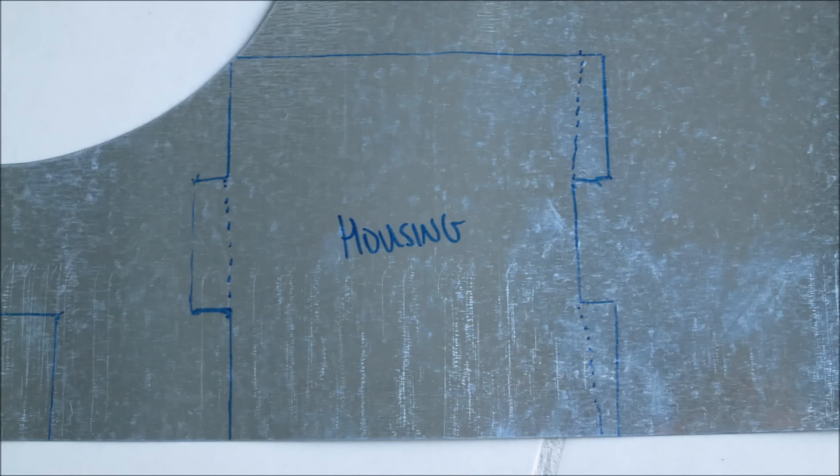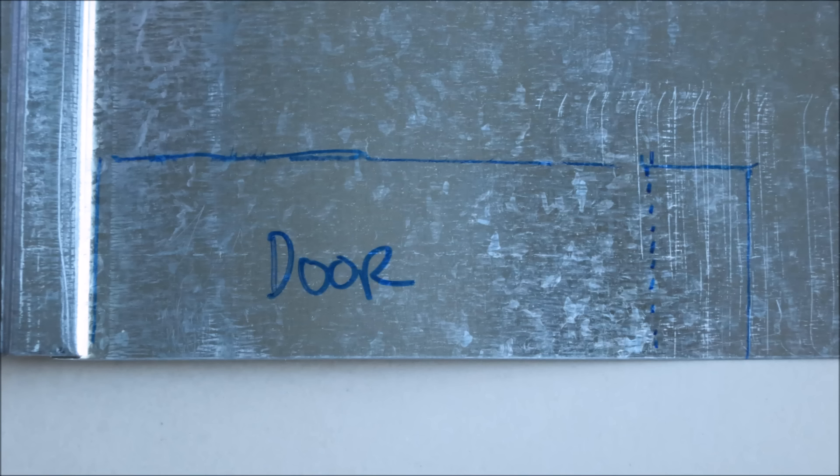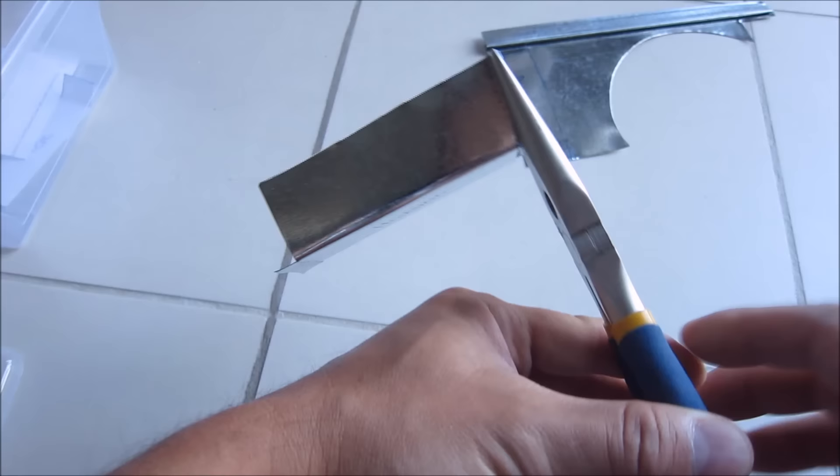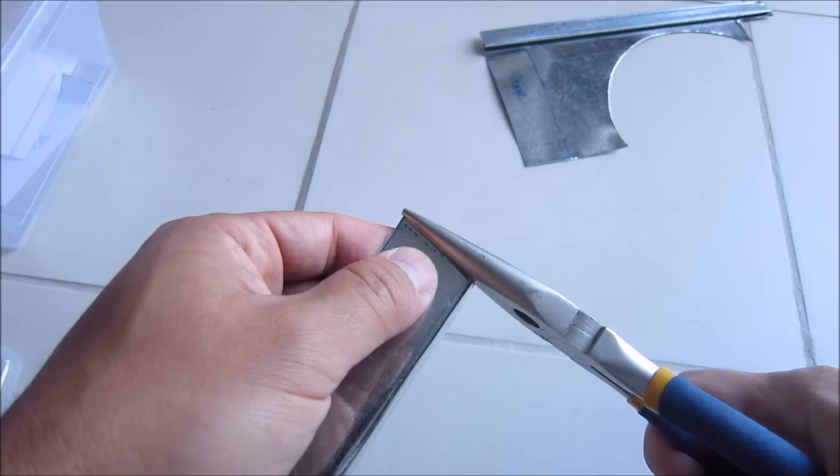So that'll be the housing. There's little tabs on the right side for folding and folding on the left side as well. The door just has one little folding part where the hinge will be. Just to give sharper lines, I use a set of pliers to do the folds.